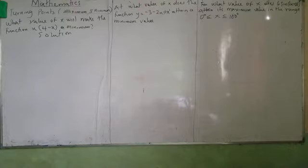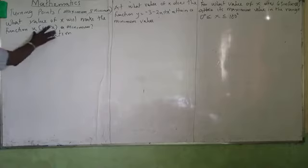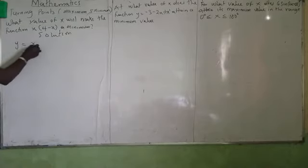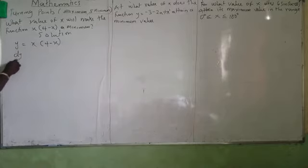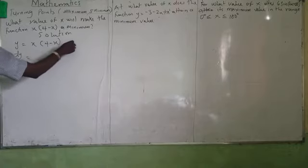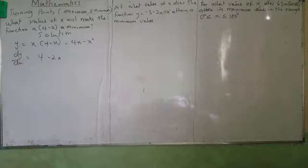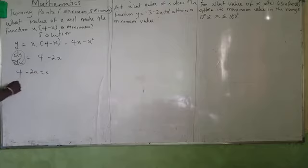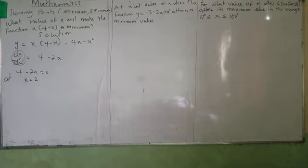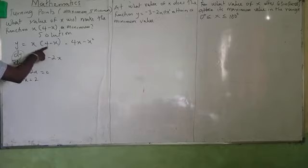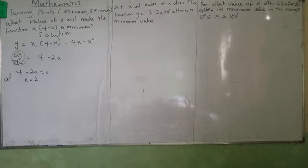We need to find what value of X makes the function maximum. We have Y equals X bracket of 4 minus X, which expands to 4X minus X squared. Differentiating gives dY/dX equals 4 minus 2X. Setting this to 0: 4 minus 2X equals 0, so X equals 2. It means the function is maximum at X equals 2, giving a maximum value of 4.